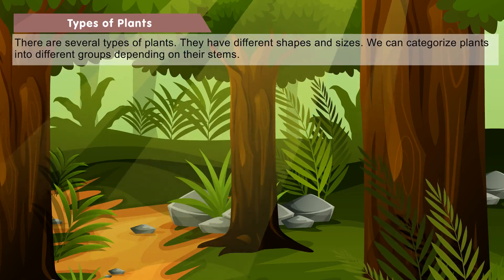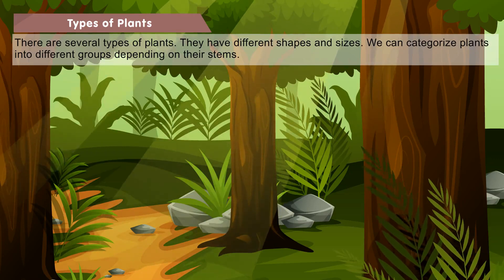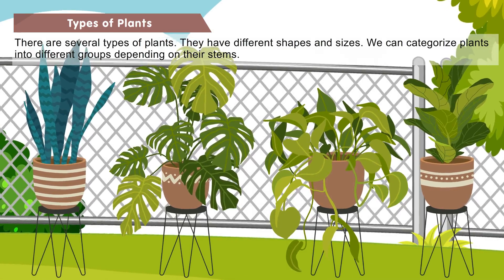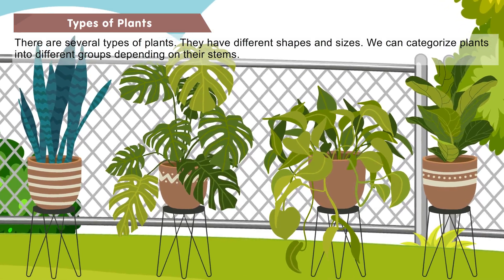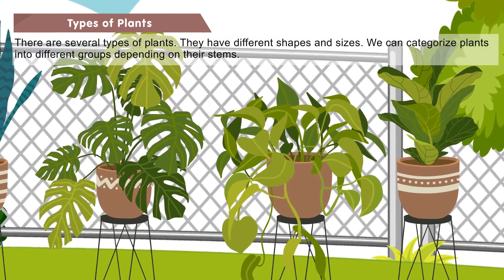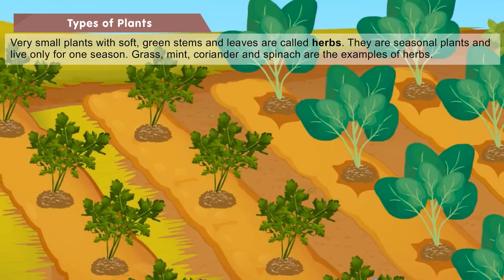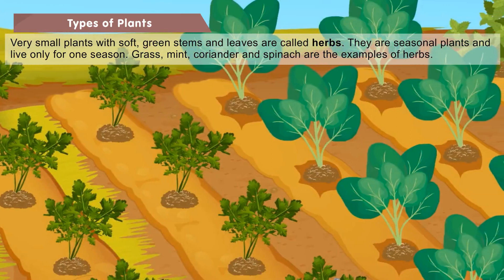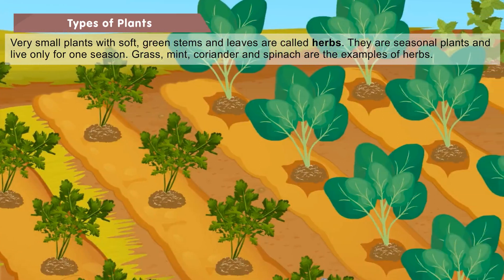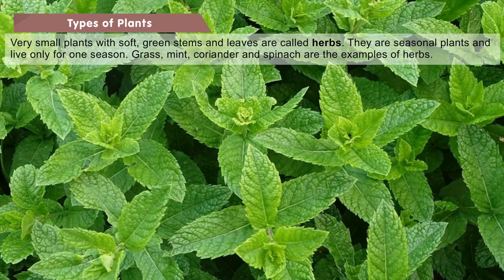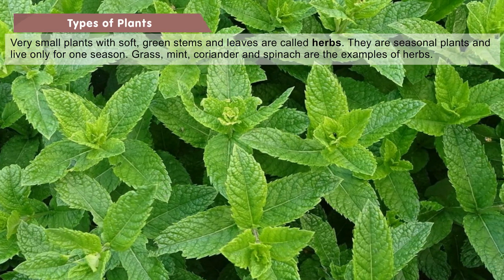Types of plants: There are several types of plants. They have different shapes and sizes. We can categorize plants into different groups depending on their stems. Very small plants with soft, green stems and leaves are called herbs. They are seasonal plants and live only for one season.